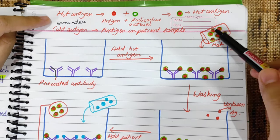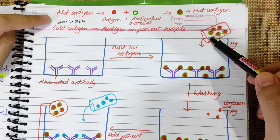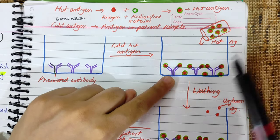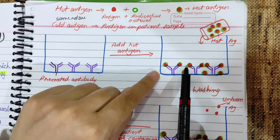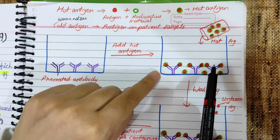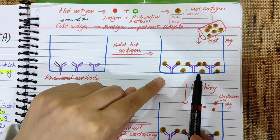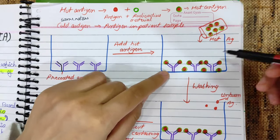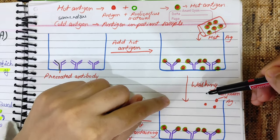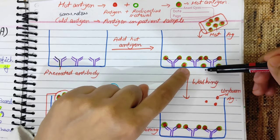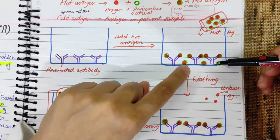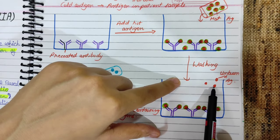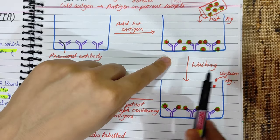This is our hot antigen. We have added the hot antigen here. It will bind with the pre-coated antibody. And we will remove the unbound antigen by washing. We will remove the unbound antigen from the antibody.